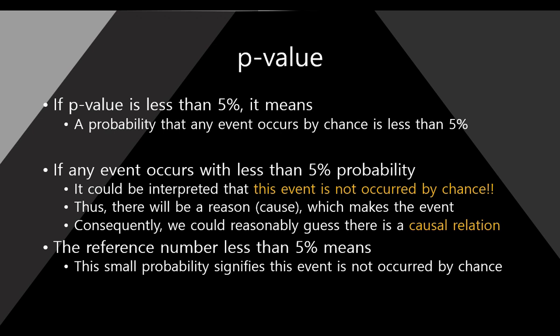So the reference number of less than 5% means this small probability signifies the event is not occurred by chance.